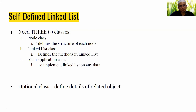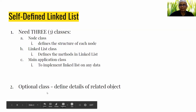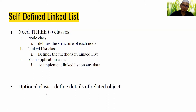The first class is the Node class, which defines the structure of each node. The second class is the LinkedList class, which defines the methods. The third is the main application class, which is used to implement the linked list on any data. The optional class is used to define an object.